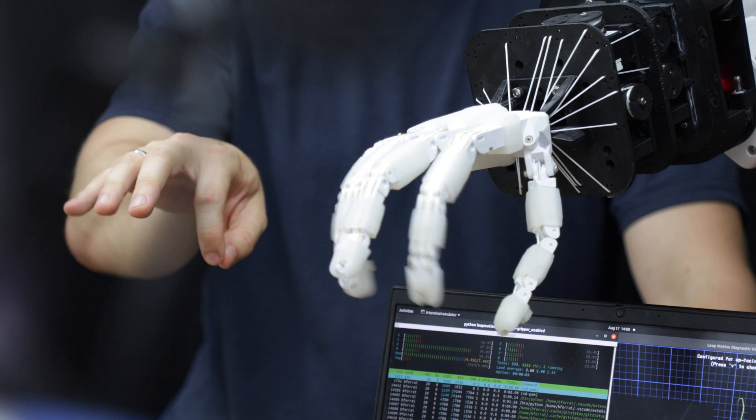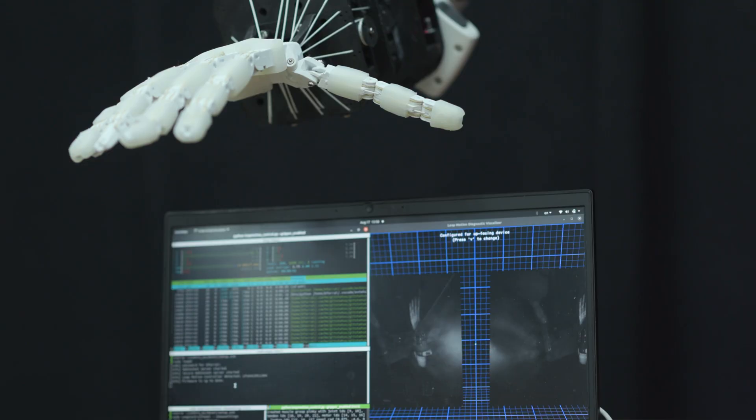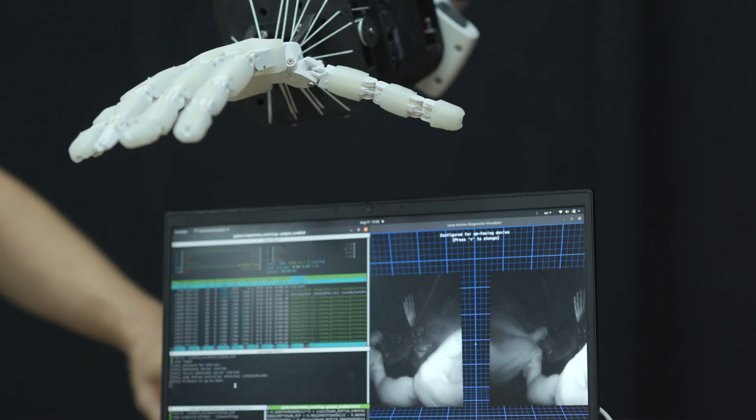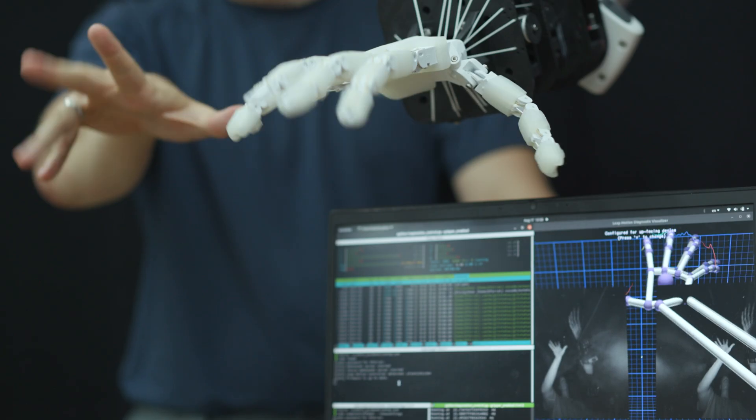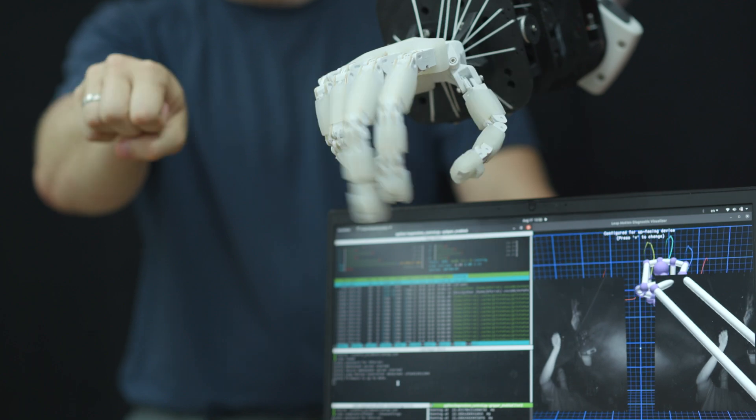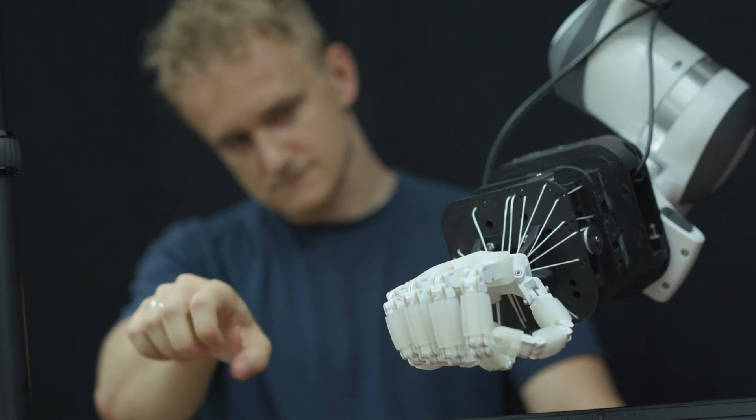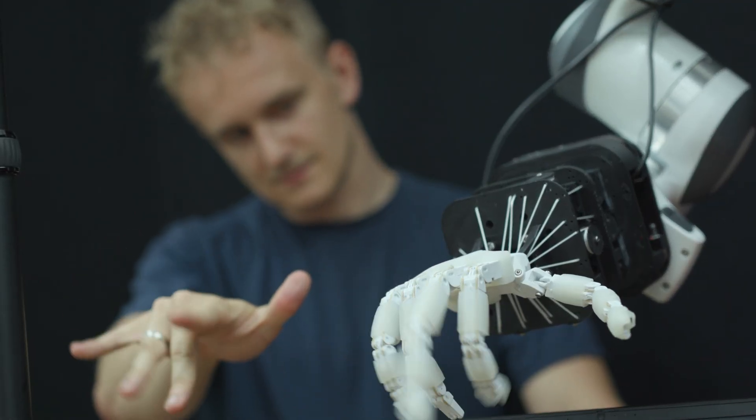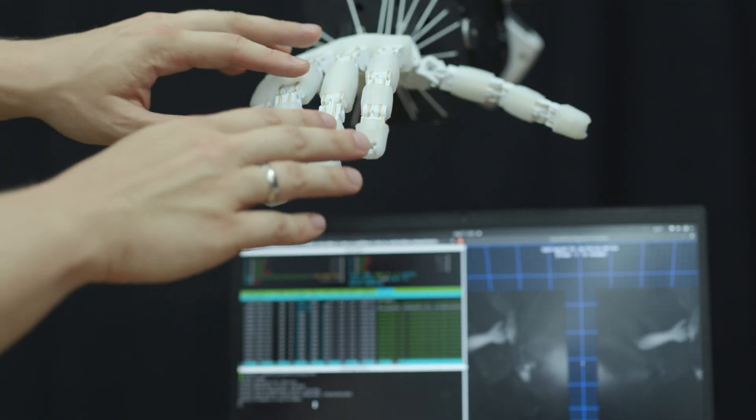Placing a camera near our robotic hand enhances perception and interaction. Strategically placed, it offers a comprehensive view and empowers the robot to recognize objects, gauge distances, and adapt in real-time. Sensors elevate our hand's capabilities.